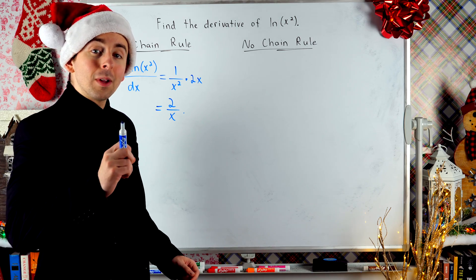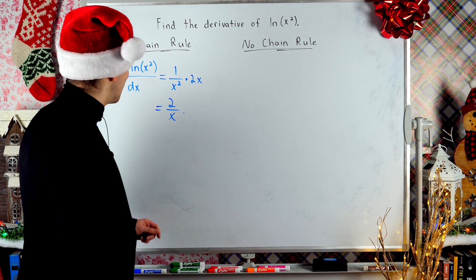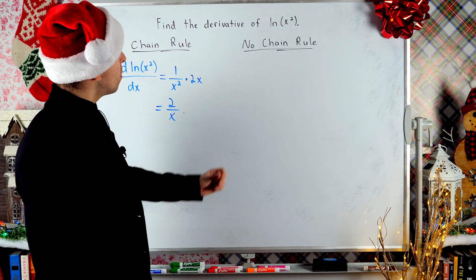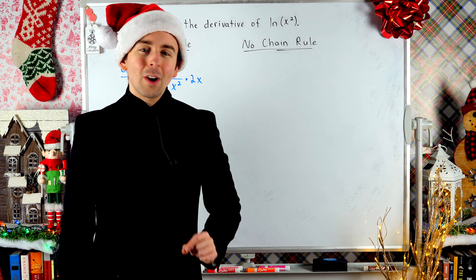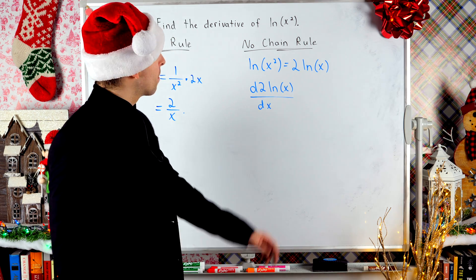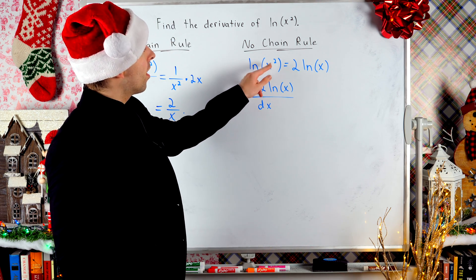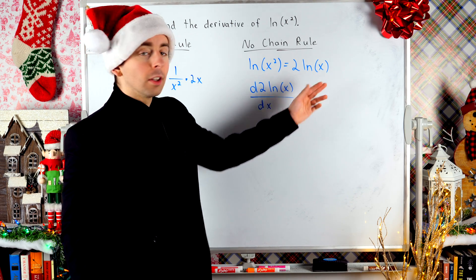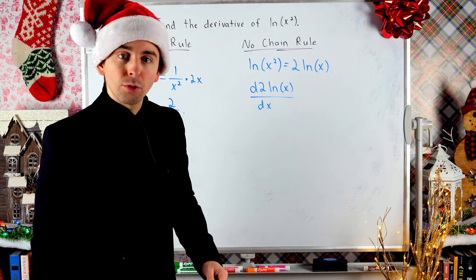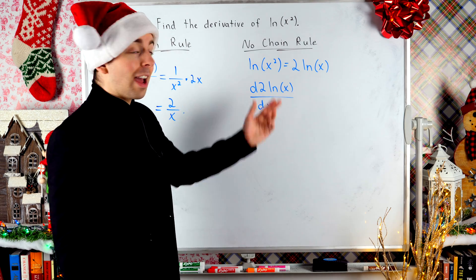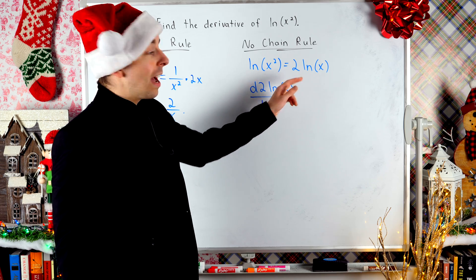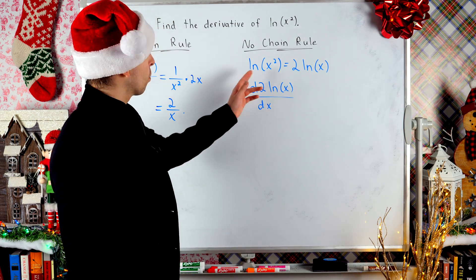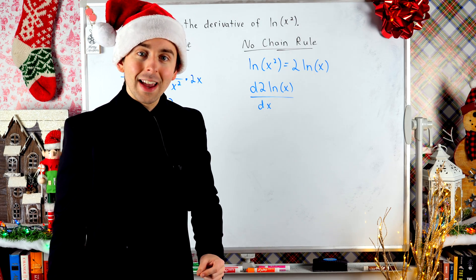We've got 2x divided by x squared, so a factor of x can be cancelled from the numerator and denominator, and our answer is 2 over x. Not too bad. The chain rule works just fine, but if you remember your log rules, then you could do this without the chain rule. Let's try that. We've got to remember that the log of something to a power is the same as that power times the log of whatever that base was. So log of x squared — we can take that power of 2 and bring it down as a factor with multiplication.